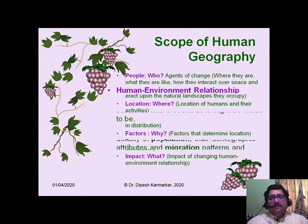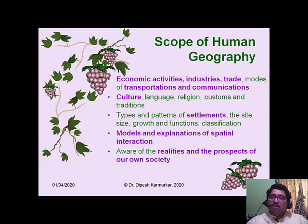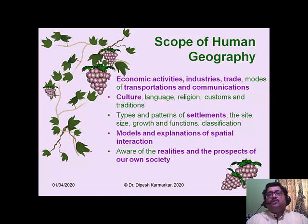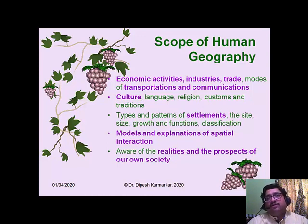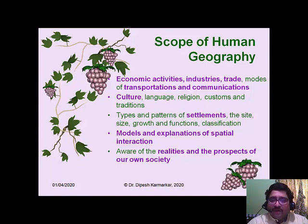Similarly, there are aspects of culture, settlements, and numerous other aspects studied in human geography. Just as other social sciences have developed their own theories, models, and research methodologies, human geography also has its own models, theory building, research methodology, unique statistical applications, cartography, and cartographic techniques to depict human geography phenomena on maps.